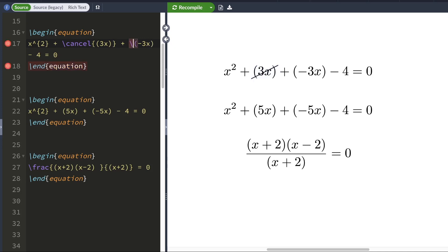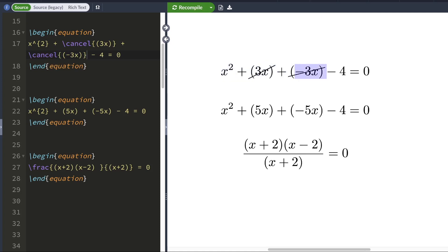I'm going to do the same with negative 3x. I'm going to type backslash cancel. When I hit compile, LaTeX would cancel this out.